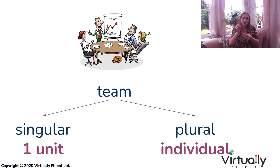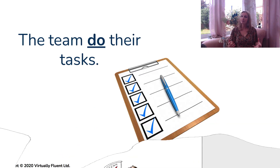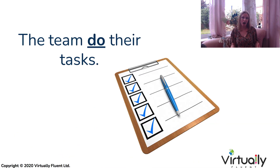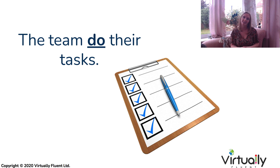However, when we want to talk about each individual person or thing inside that collective noun doing something different or something individual, then we can use the plural form of the verb instead. For example, 'the team do their tasks.' It might be that one person is doing some marketing, the next person is responding to some emails, the next person is working in finance. They are one collective team, but each person is doing something different, so for this particular sentence we would need the plural form of the verb.